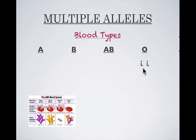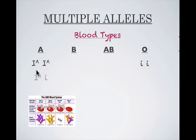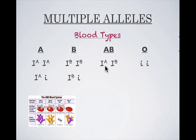Since O is recessive, we have two lowercase i's. For type A blood, they can be homozygous — shown as I with a superscript capital A — meaning the capital A shows the protein marker on those blood cells. They can be homozygous for type A or heterozygous, meaning they carry the allele for O. The same goes for folks with type B blood. And the only way to get type AB blood is to have one allele giving protein marker A and another giving protein marker B.